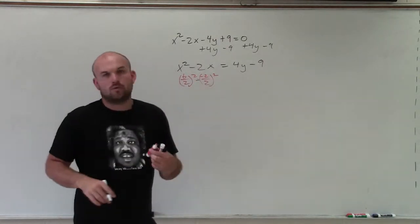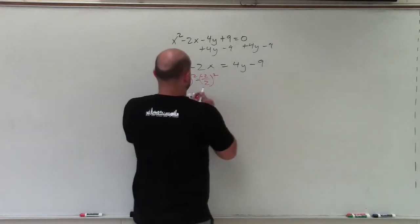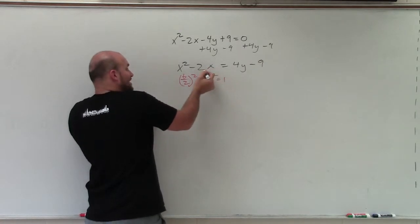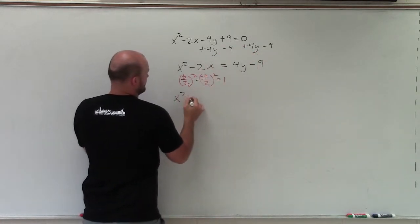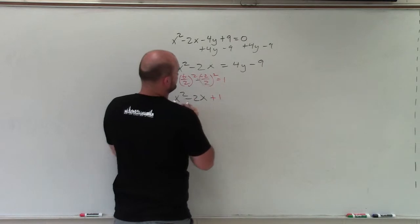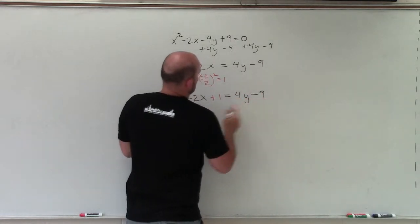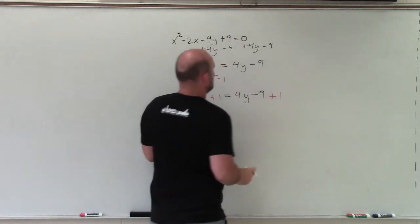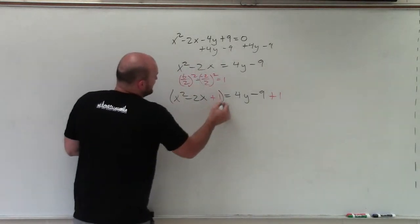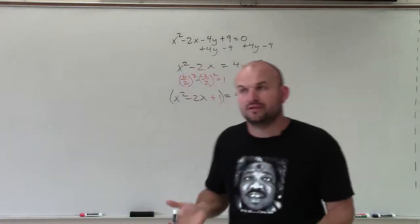Negative 2 divided by 2 is negative 1. Negative 1 squared is positive 1. So now I'm going to add 1 on both the left side and the right side, because I have to produce equivalent equations. By taking b divided by 2, I've created a perfect square trinomial on the left side.